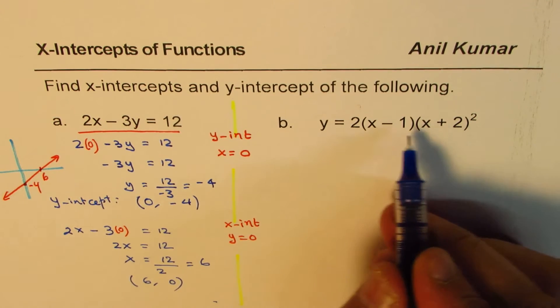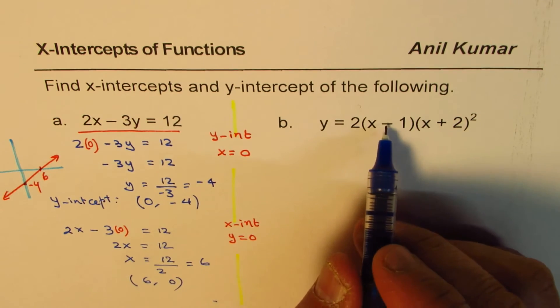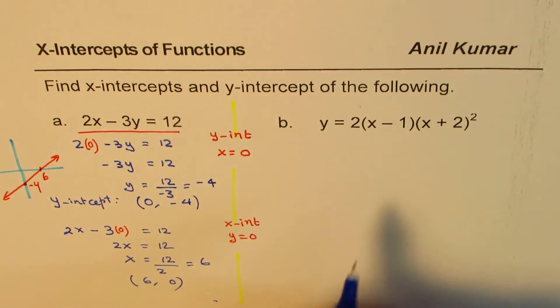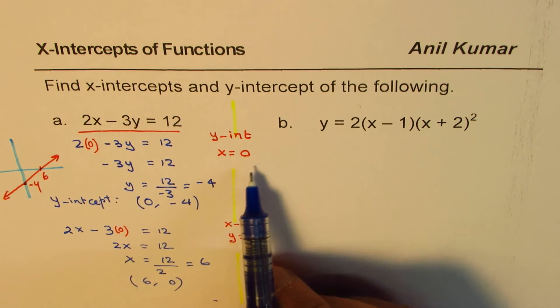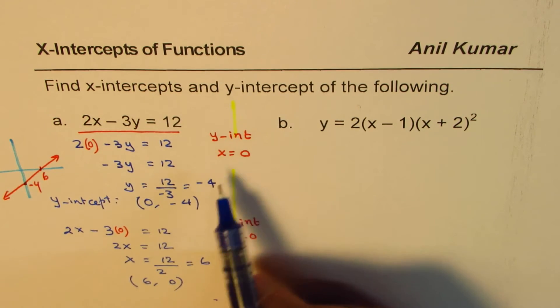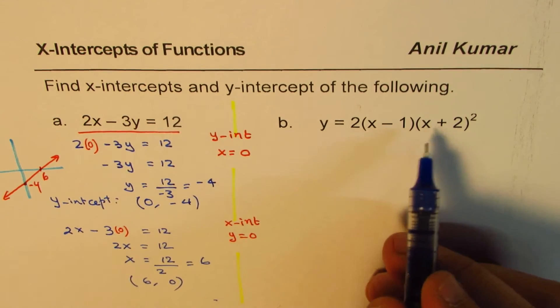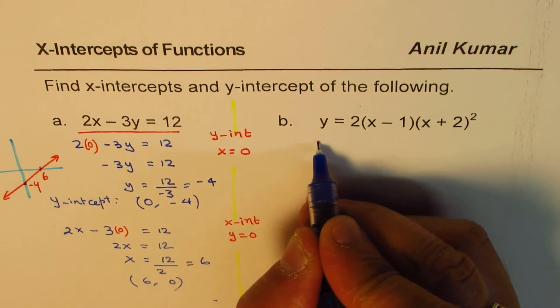Now let's look into the next one, that is a quadratic or cubic equation, power 2 and power 1. How do we find x and y-intercept here? Well, the concept is simple and straightforward, the same concept which we use for the line. Y-intercept means a point where x is 0.